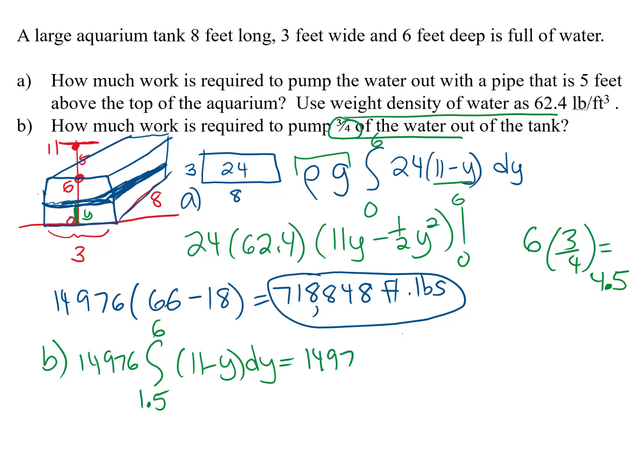So we've got our 14,976, and then when we put in our six, we got 66 minus 18. And now we need to put in our lower limit of 1.5 and subtract that off, so it's minus 11 times 1.5 plus one-half times 1.5 squared.